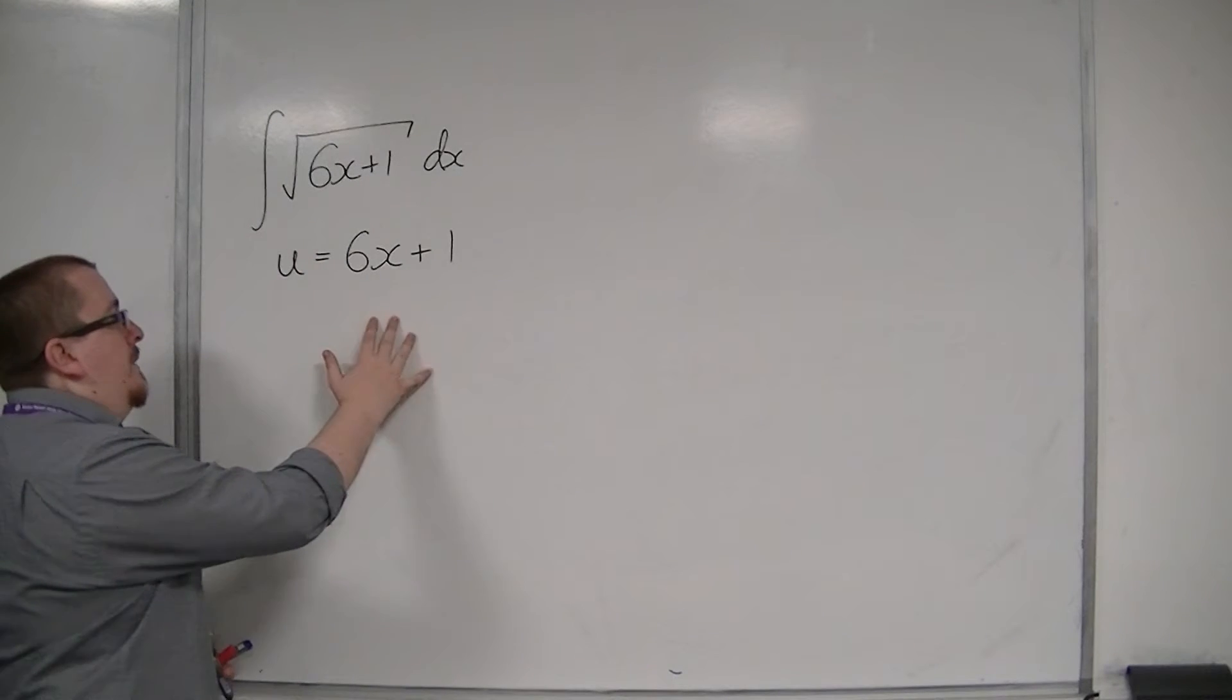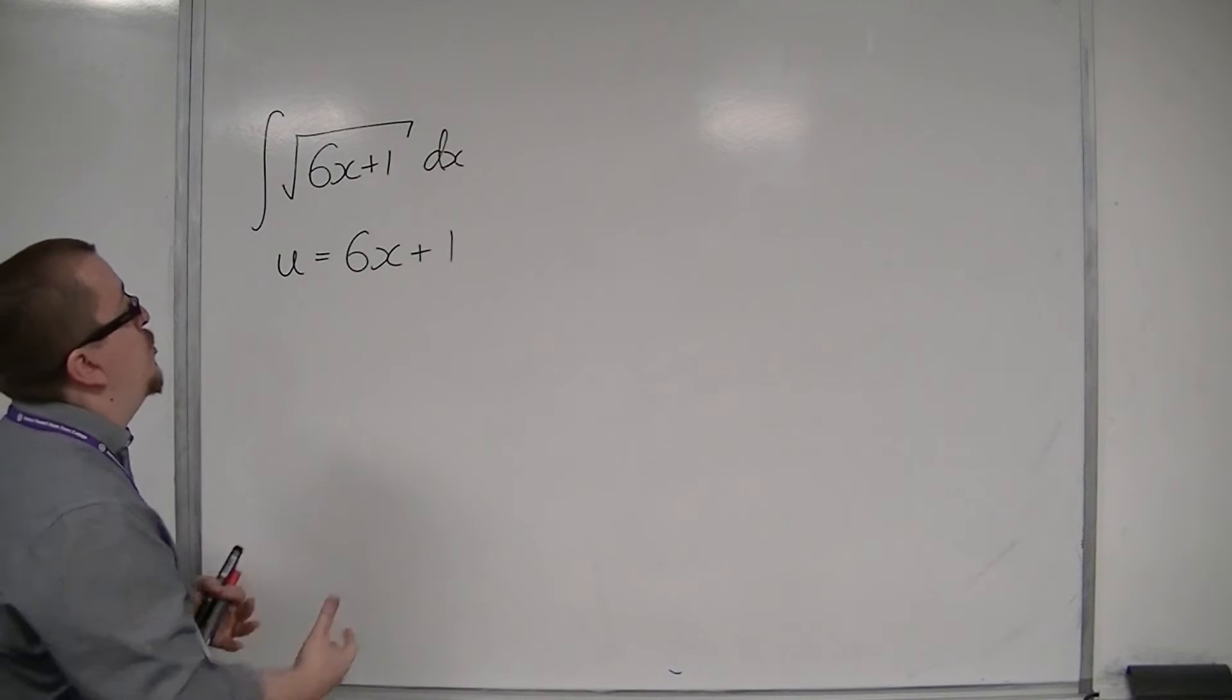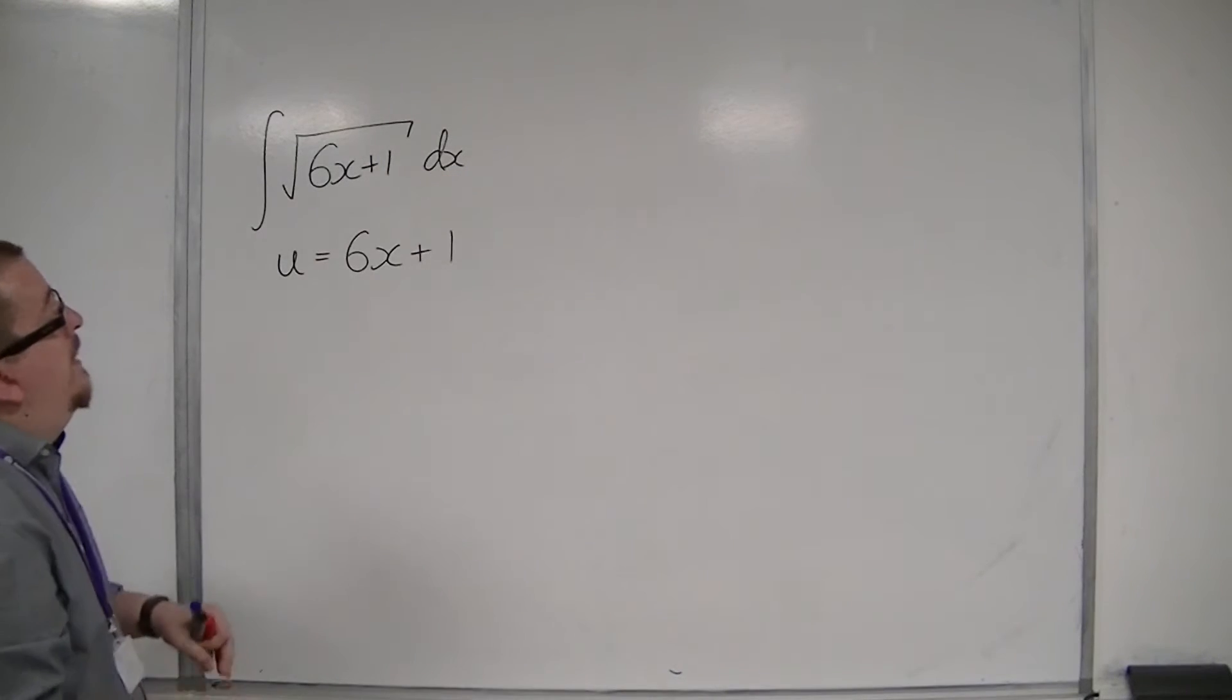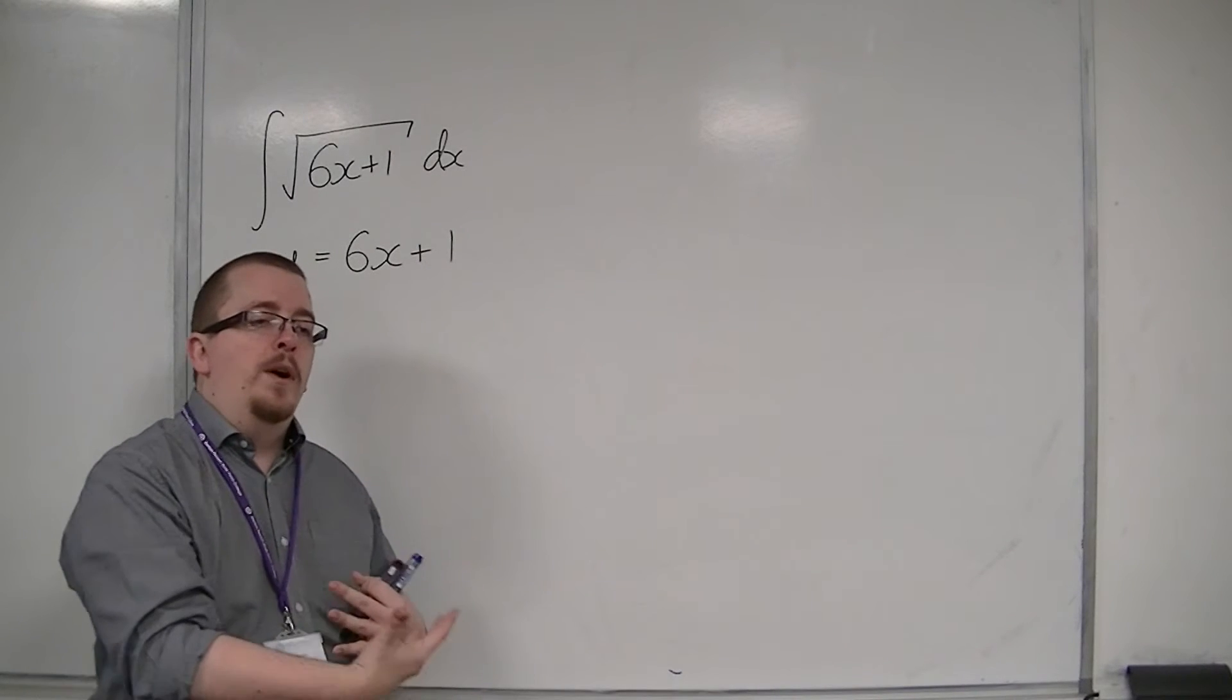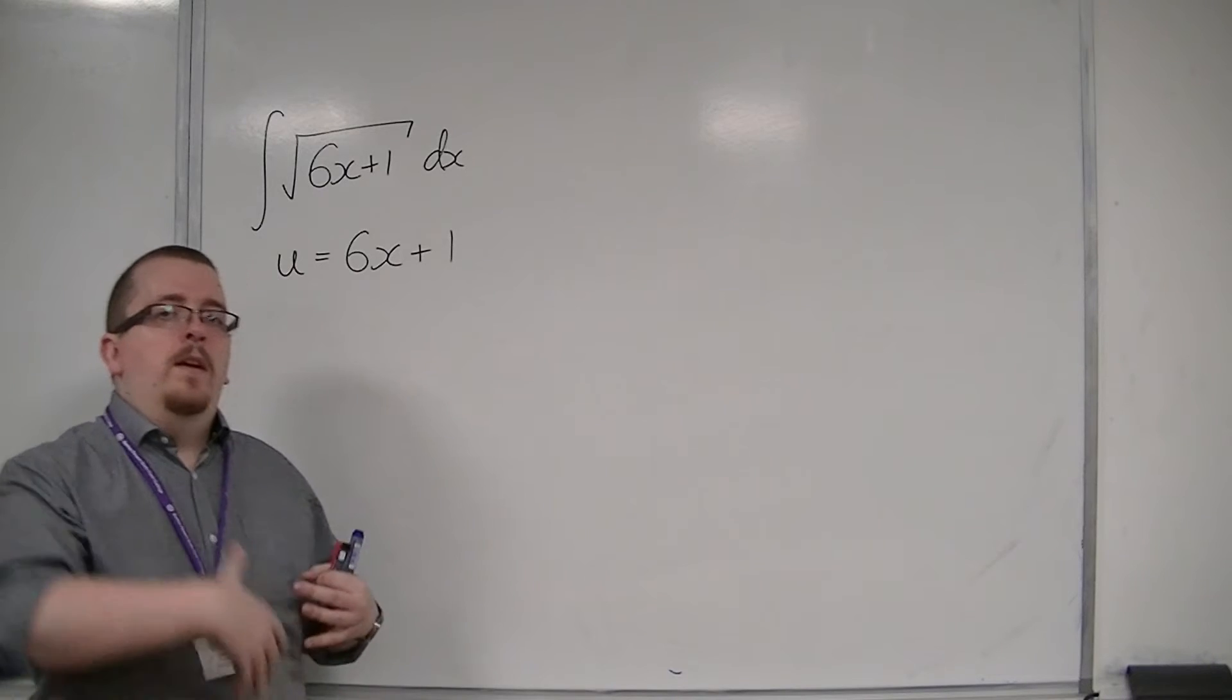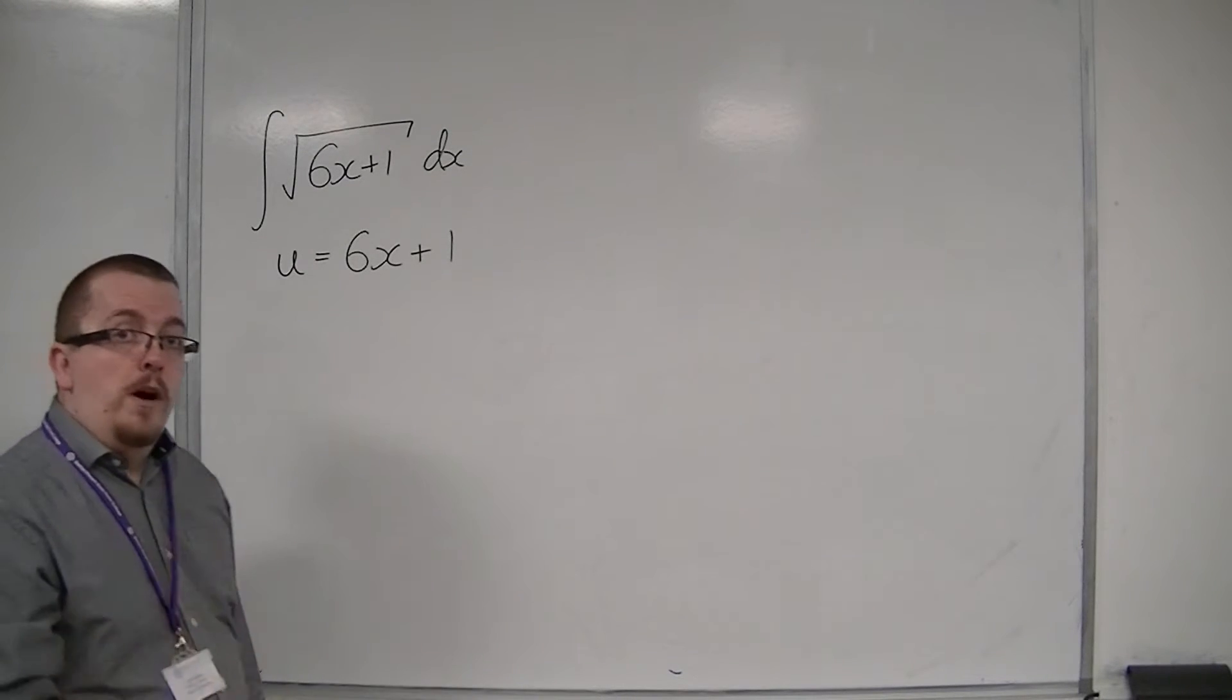So, then, with all of this process, I need to find a substitution for this dx. I've got a substitution for the 6x plus 1, but now that I am putting u into the integral, I need to be integrating with respect to u rather than x.